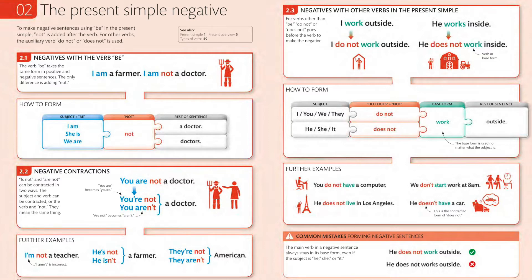Good afternoon everybody, welcome back in another beautiful lesson as part of our continuity of presenting grammar in a more beautiful and entertaining way. Our lesson today is about the present simple negative — or how to negate something you're saying in the present. In the previous lesson we talked about the three basic time dimensions in English: past, present, and future. Today we'll talk about how to negate something in the present tense — for example, 'I eat' versus 'I do not eat.'